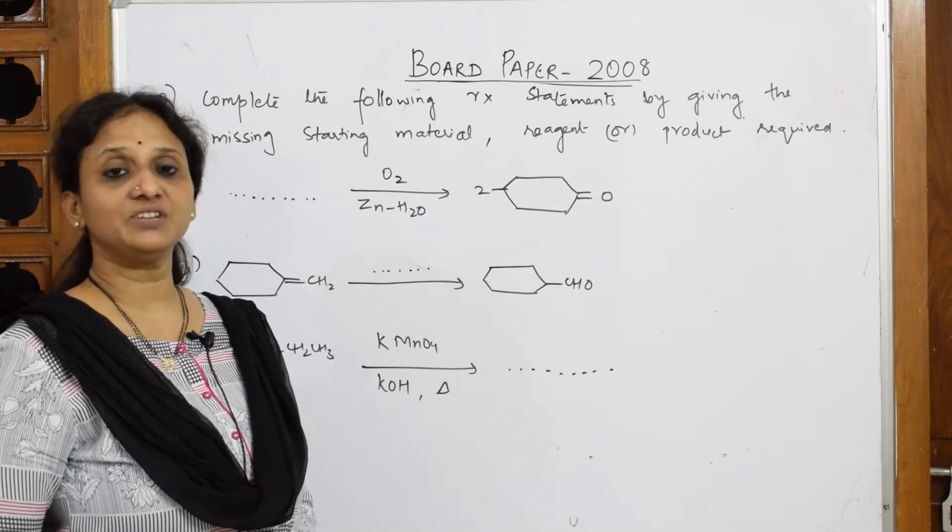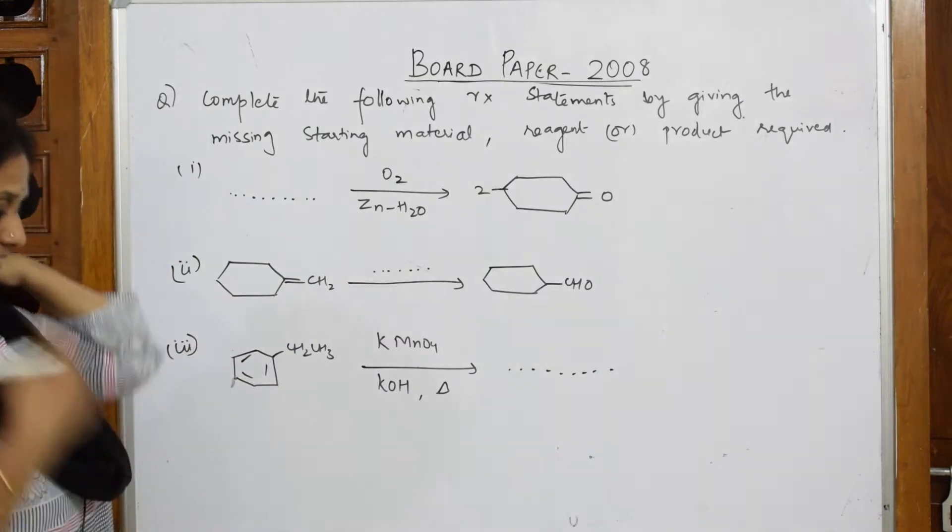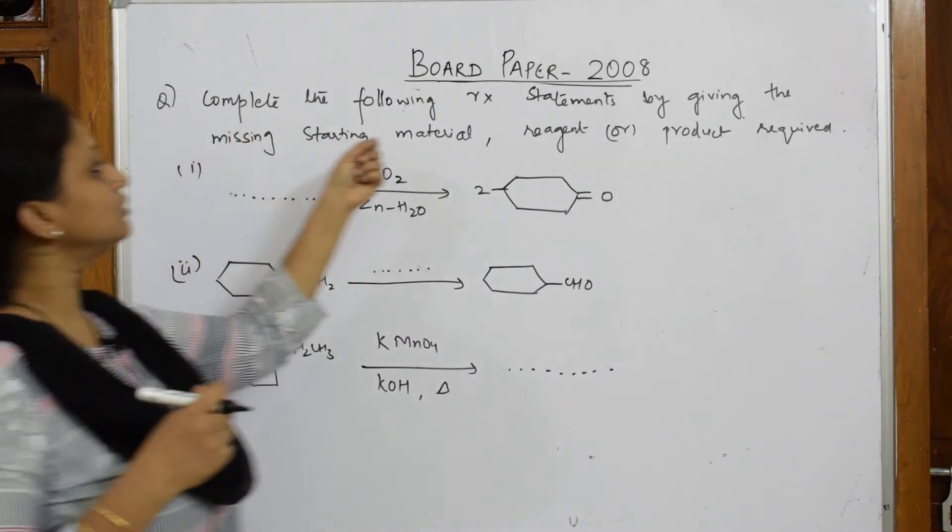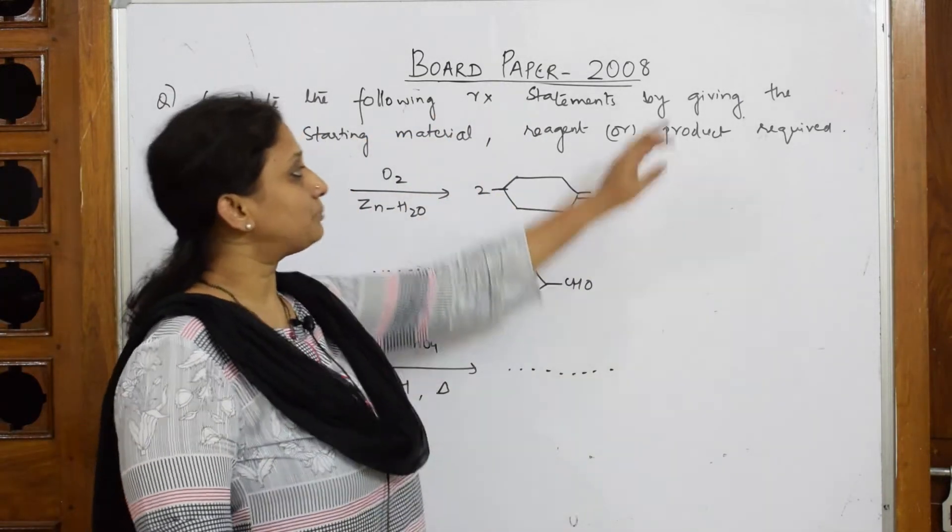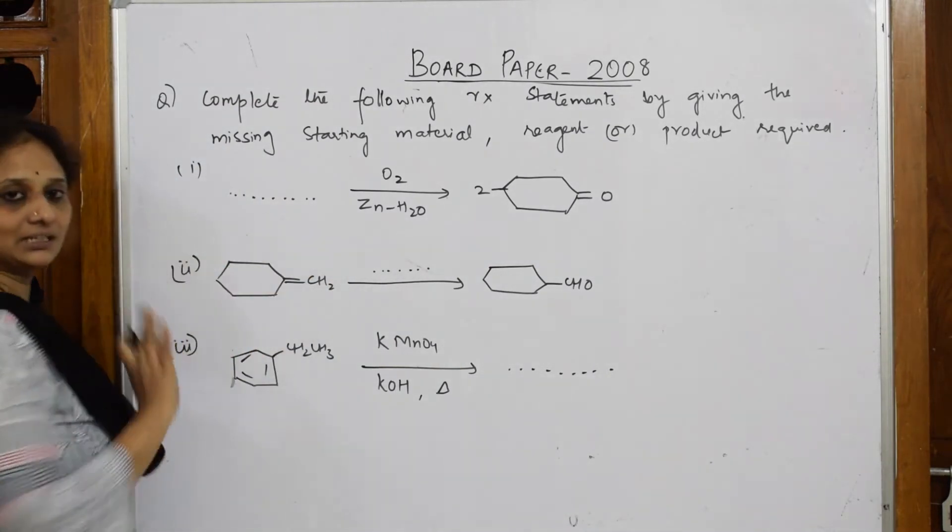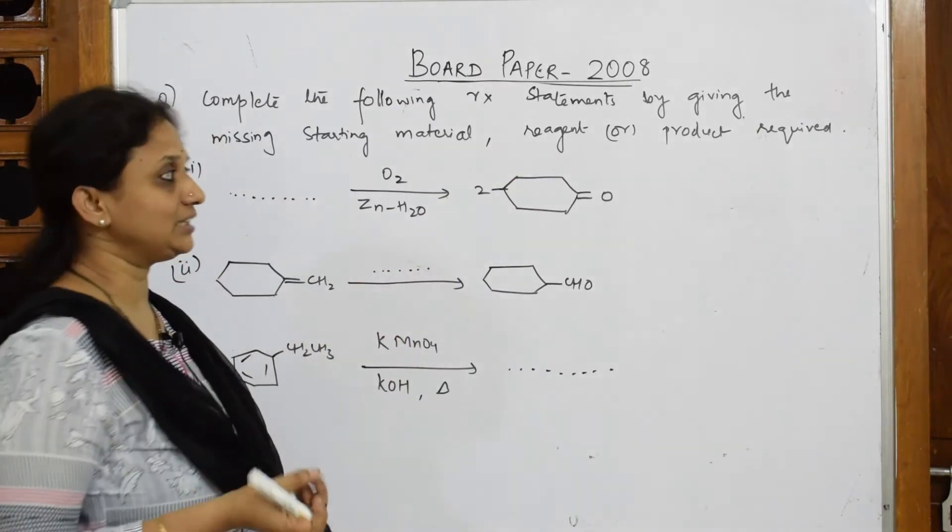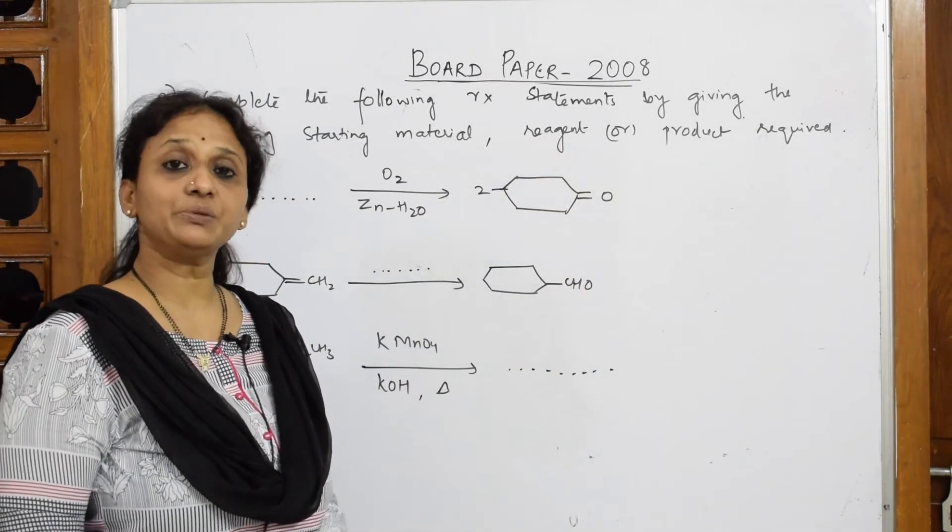We never know from where they're going to ask. In this particular reaction, they've asked to complete the following reaction statements by giving the missing starting material. You should either predict the reactant or reagent, the reagent or the product required. Anything may be asked.